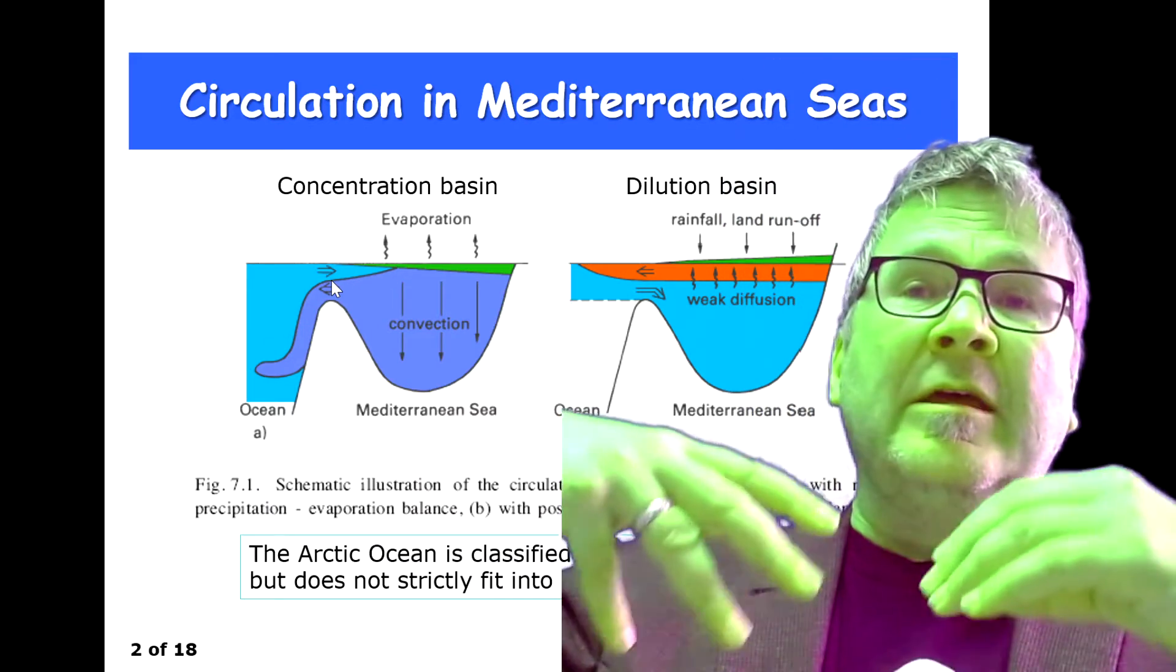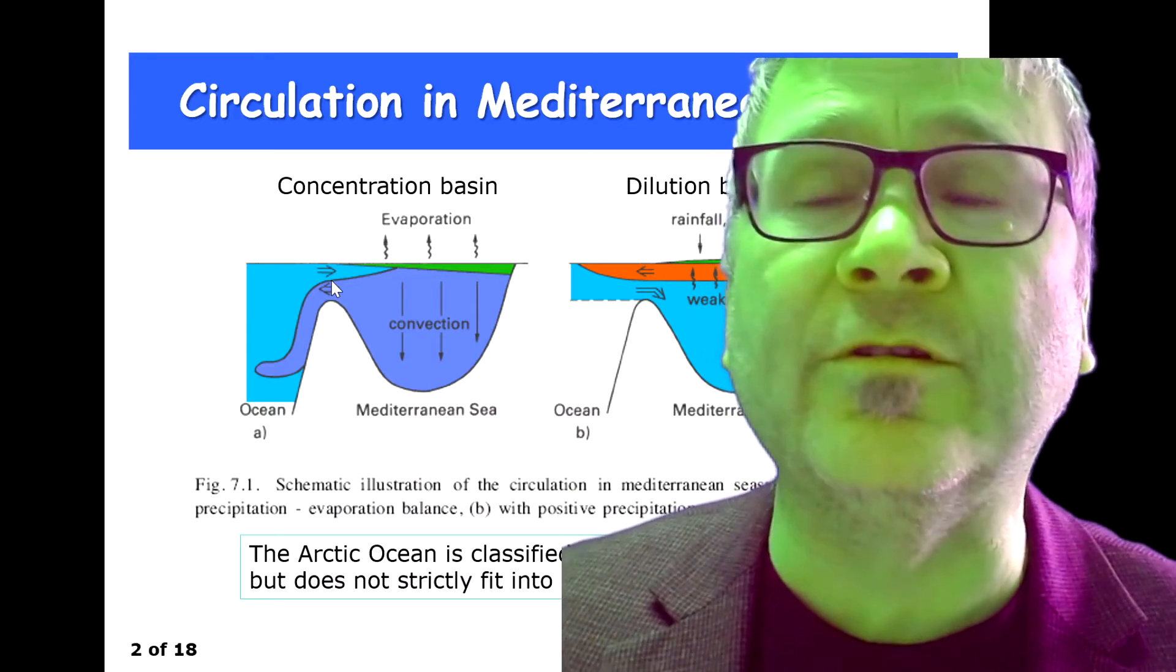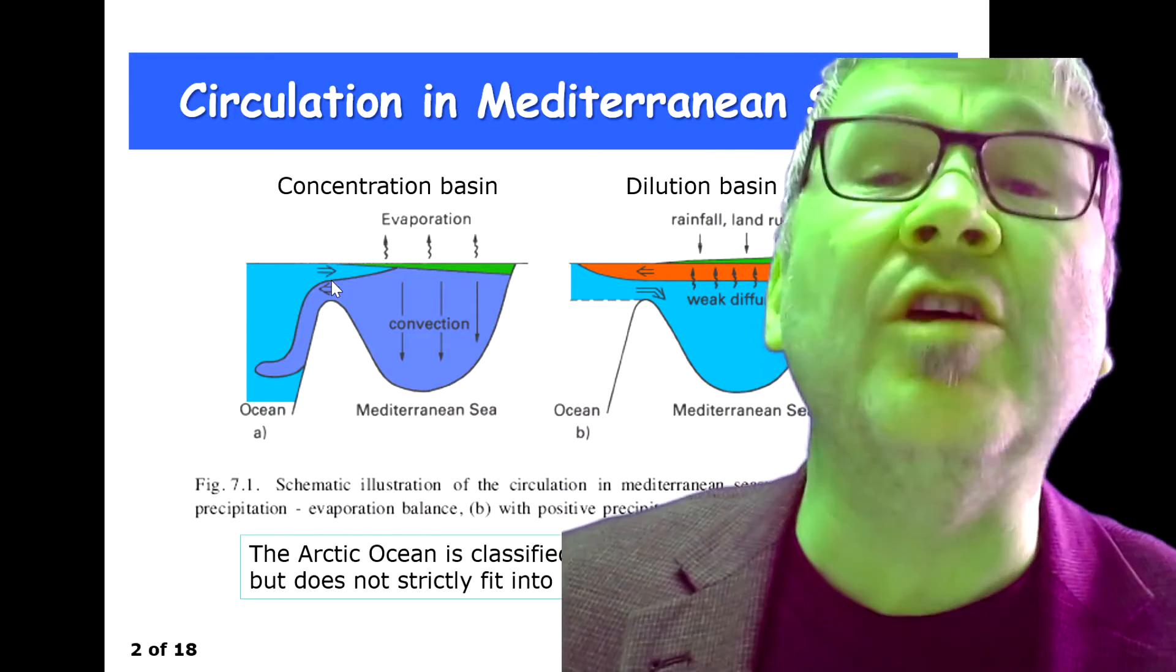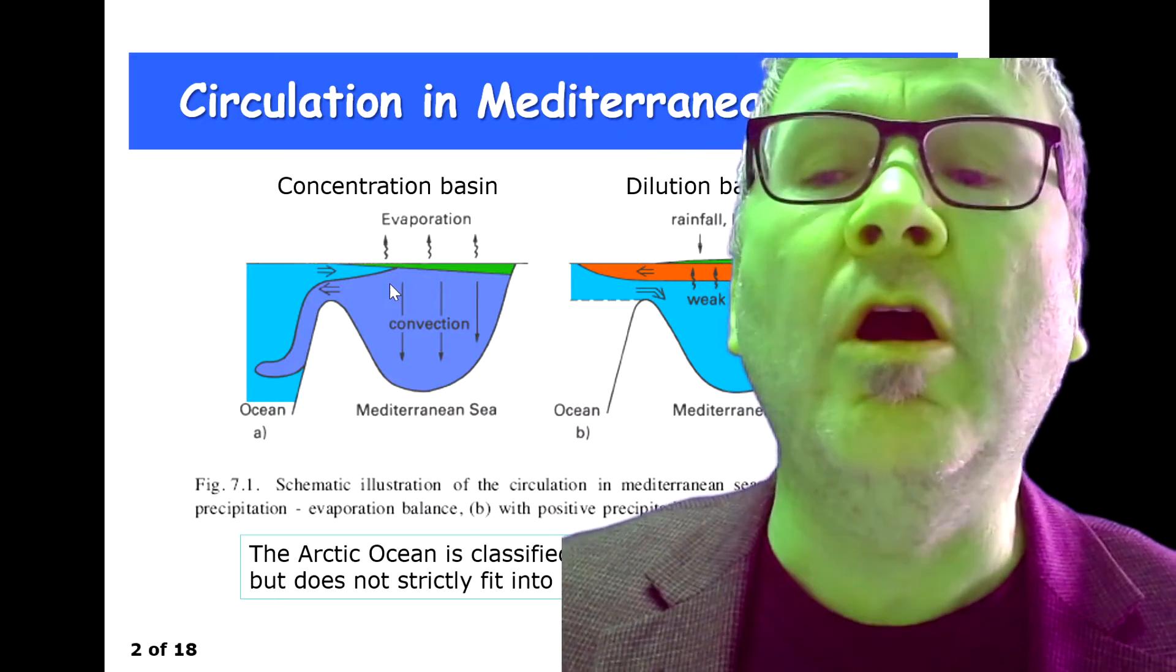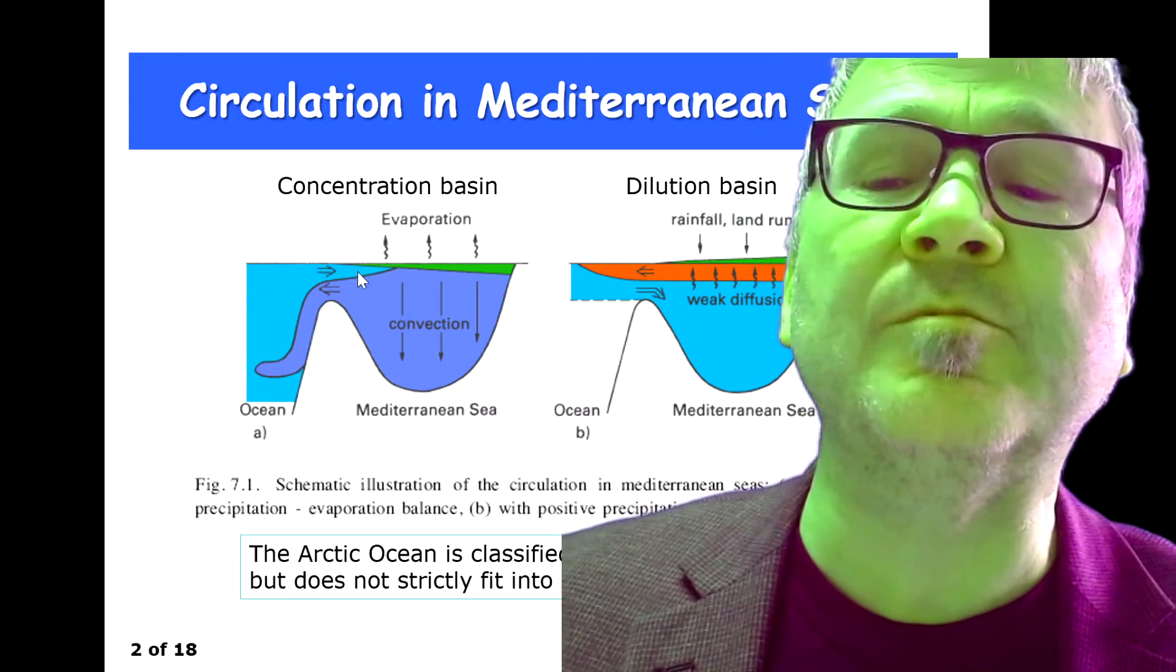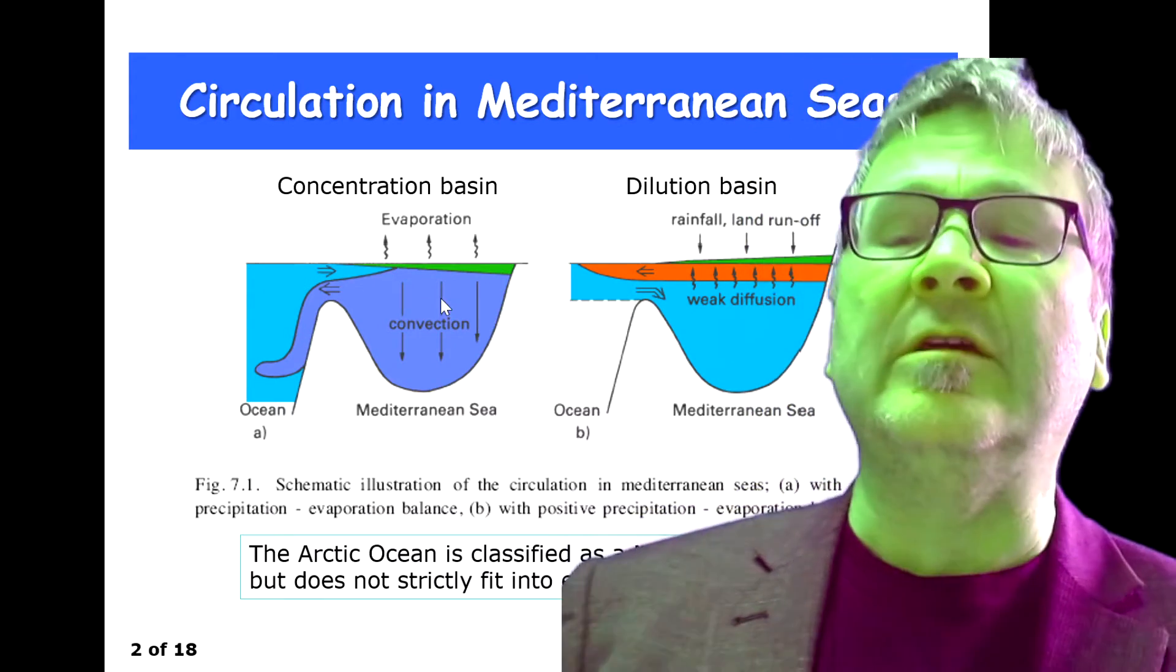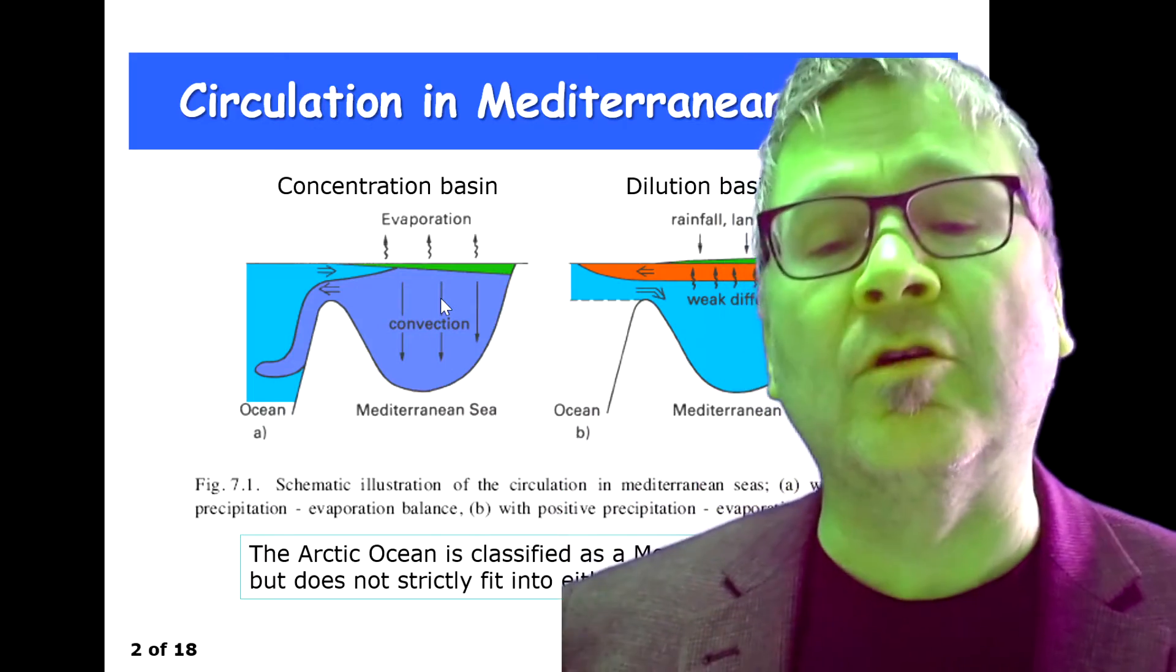And there is a return flow which actually sucks in ambient water in the surface layer. You have an exchange circulation which consists of an outflow of hypersaline water and an inflow of surface water. This is how the circulation in these concentration basins of Mediterranean seas looks.